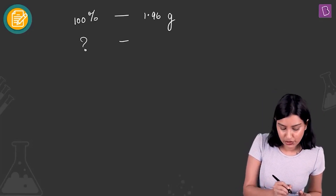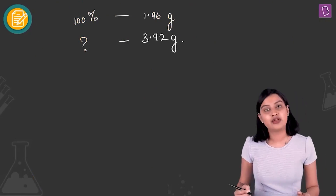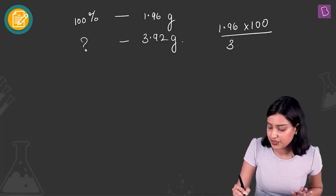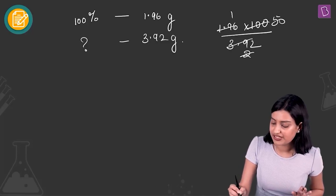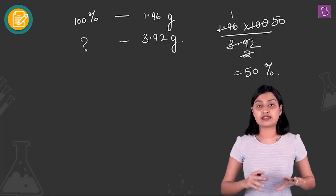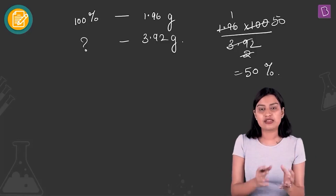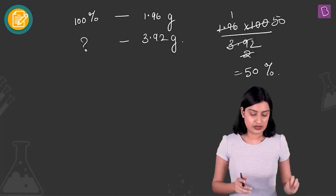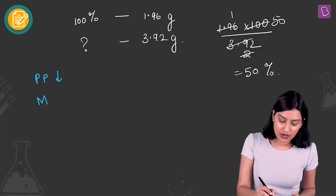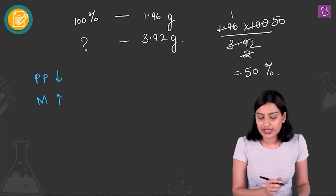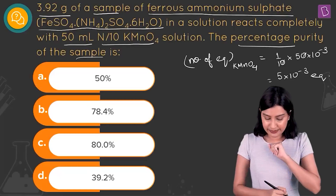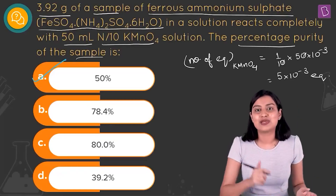At 100% purity you need 1.96 g, but 3.92 g of the impure sample was taken. Percentage purity = 1.96 × 100 / 3.92 = 50%. As percentage purity decreases, the mass of sample required for the same number of equivalents increases — inverse variation. So option A, 50%, is the right answer.